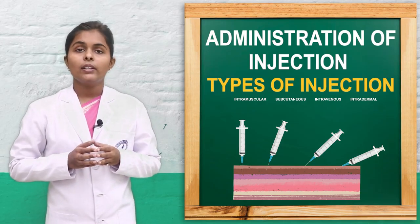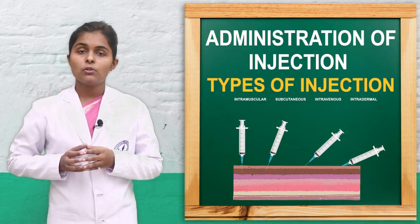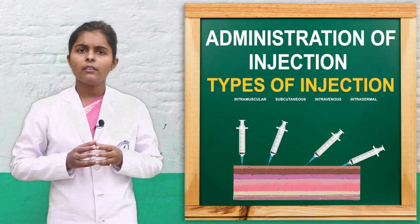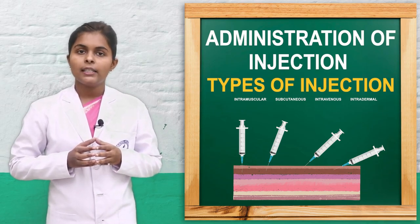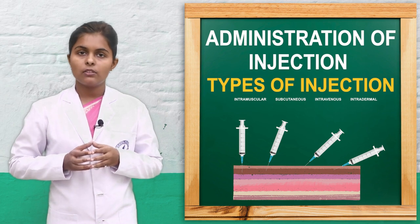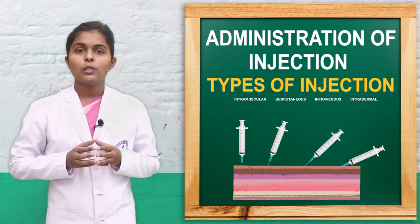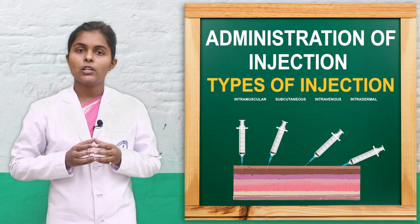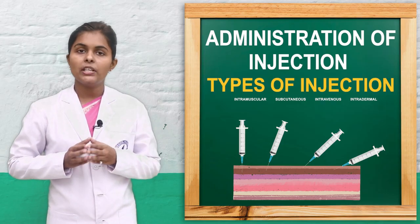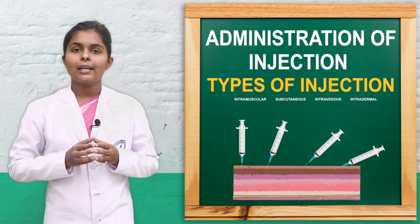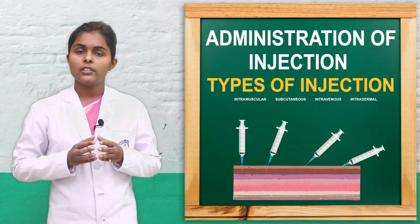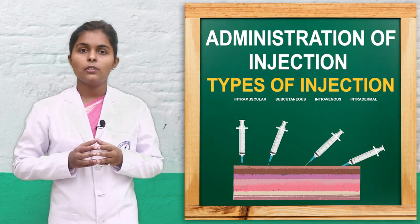These are the types of injection. We also use infusion — when a large amount or bolus form of medication has to be given, we can use infusion. Last is transfusion — when blood or whole plasma has to be transfused into the patient, we use transfusion.